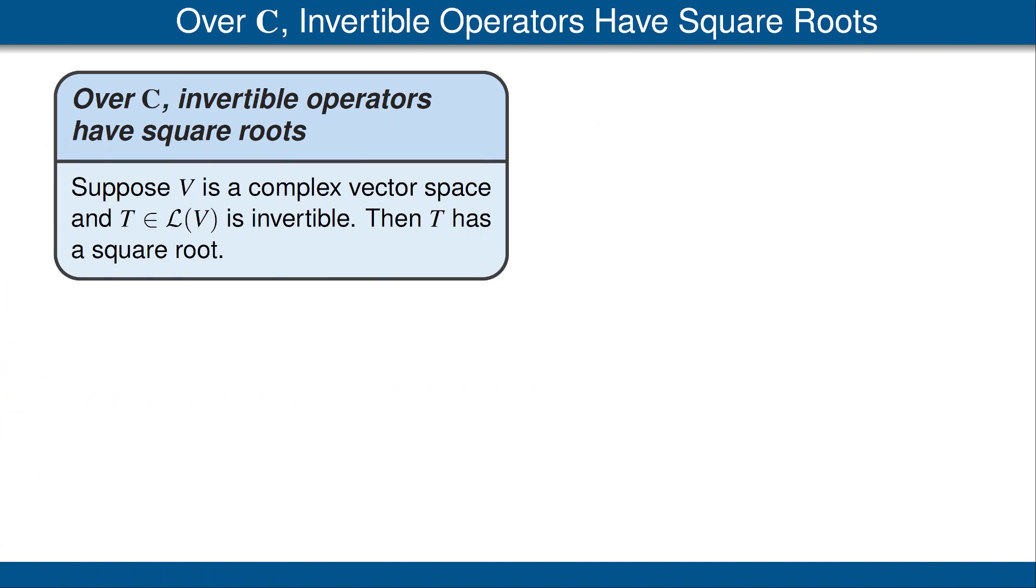Now we can use the result from the previous slide to prove the following very nice result. Suppose V is a complex vector space and T is an invertible operator on V. Then T has a square root. Before we get to the proof of this result, let me make a few comments. First, we cannot delete the hypothesis that the operator is invertible. We saw an example earlier of an operator on C³ that has no square root.